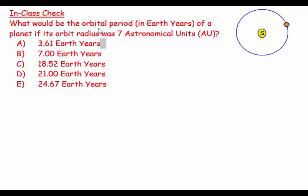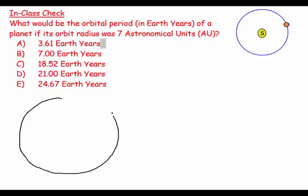This question asks: what would be the orbital period in Earth years of a planet if its orbit radius was seven astronomical units? An astronomical unit is the average distance between the Earth and the Sun — it's not always perfectly constant. We're actually closest to the Sun in the northern hemisphere's winter rather than summer. The radius of the orbit is the distance from the Sun to the planet, and the period is how long it takes to go around once.